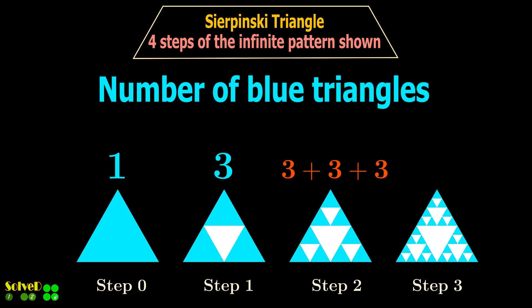Once we know the multiplication factor, we can multiply this by the previous term to move to the next term of the series. So at each step, every blue triangle gives further three smaller blue triangles. So here is our sequence for the number of blue triangles.